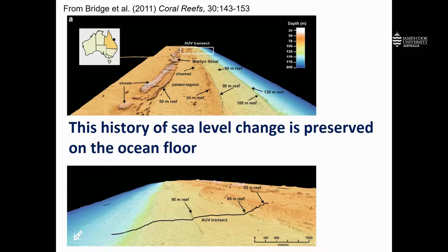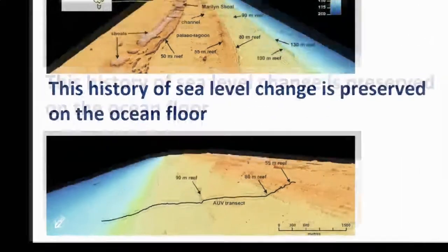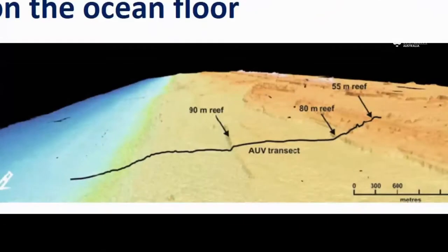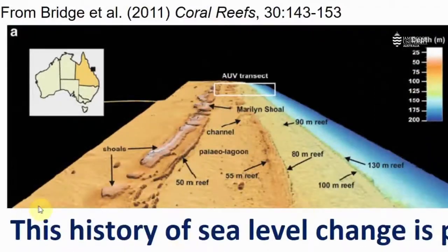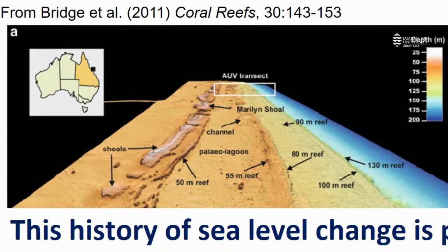These are some images from underwater scans, which are showing us the position of the substratum deep under the reef as it is today. This is from Hydrographers Passage near the southern part of the Great Barrier Reef. You can see these distinct reef platforms showing evidence of where sea level was stabilized over the history of the reef. So that history of sea level change remains preserved on the ocean floor.